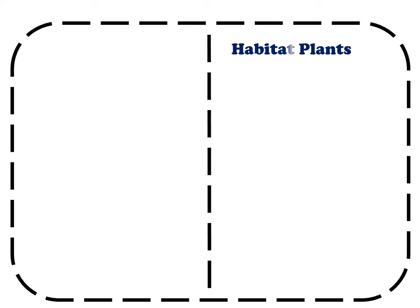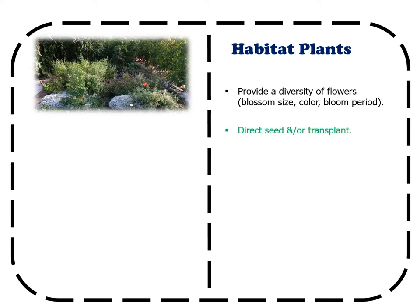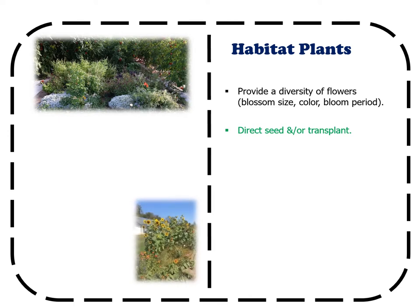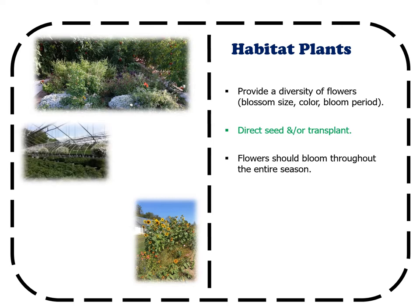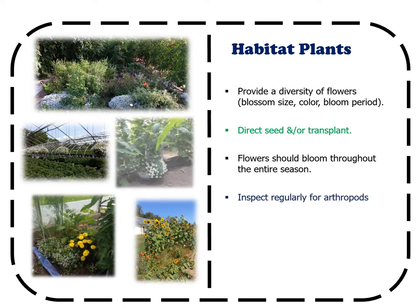Habitat Plants: Habitat plants should provide a diversity of resources to attract beneficial insects. Plants should be chosen with a mix of blossom sizes, colors, and blooming periods. Plants can either be transplanted or directly seeded into the ground or pots, or a mixture of both, to ensure a prolonged flowering period. Plants should be inspected on a regular basis for pests and natural enemies. If found to be weak, dying, or infested with unwanted pests, they should be removed and replaced.